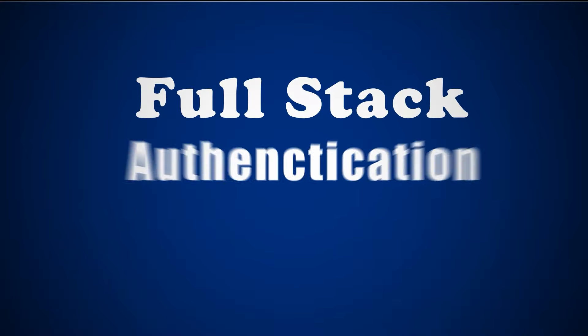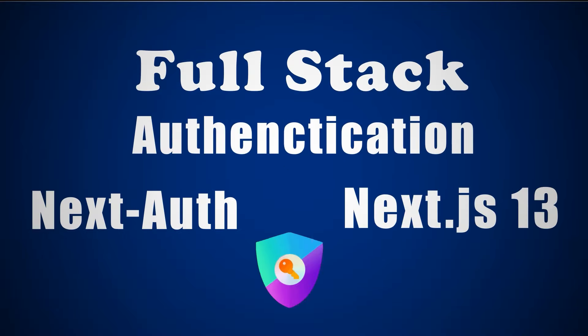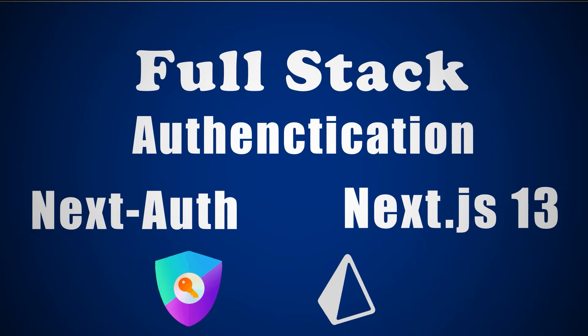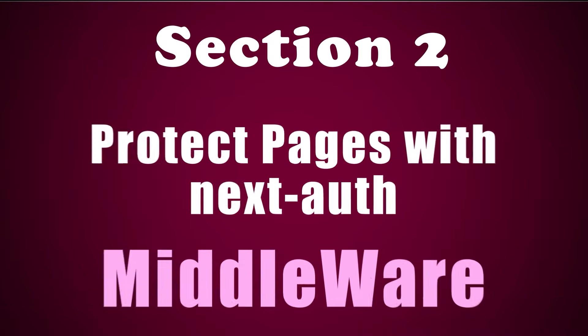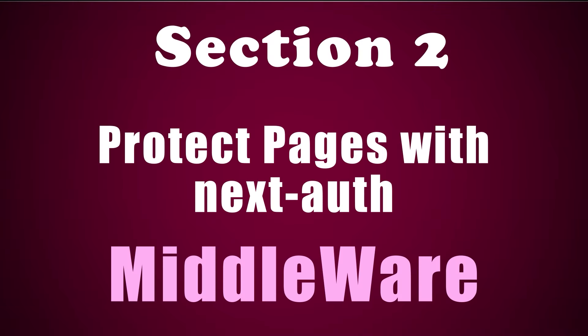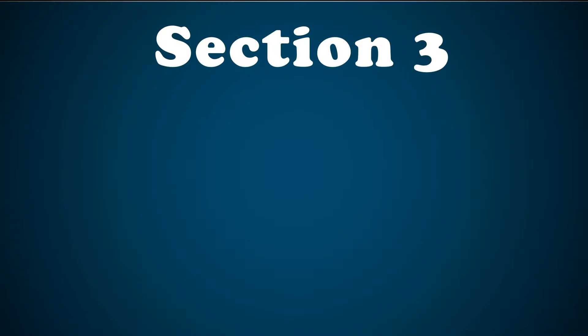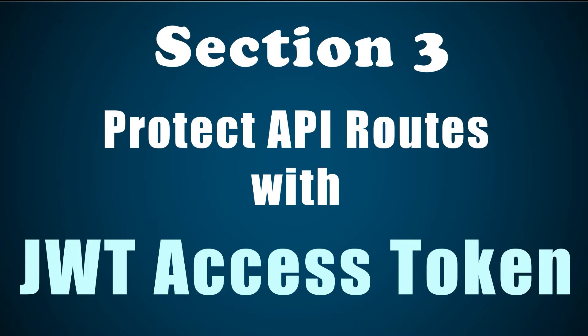Hey, what's going on developers! This video is a tutorial on full-stack authentication with NextAuth and Next.js version 13. To keep track of our users, we'll create a back-end database and set up the Prisma client to access it. In the first section, we integrate the NextAuth package with Next.js 13 inside the API directory of the app directory. In the second section, we protect pages with the NextAuth middleware. The third section is a bonus: we protect our API routes with JWT access tokens. So grab a cup of coffee and join me!